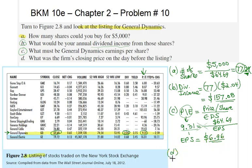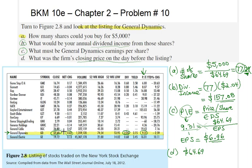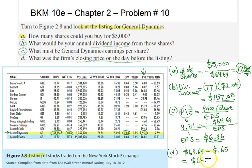Finally, in part D, the question is asking for the closing price on the previous day. We know the closing price today was 64.69 dollars, and the net change is an increase of 65 cents from yesterday to today. Therefore, yesterday's price was 65 cents cheaper, which gives us 64 dollars and four cents. And that solves our problem — see you in our next video.